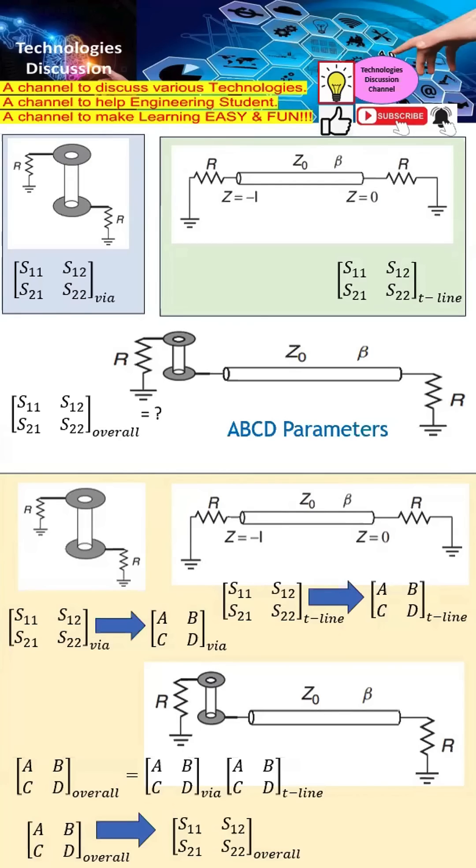For example, we have the Z parameters, which are the impedance parameters. We also have the Y, which are known as the admittance parameters. We also have the S parameters, which are the scattering parameters. And then we also have the ABCD parameters.